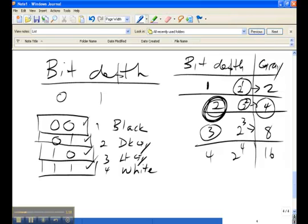Now typically for grayscale images it really doesn't make sense to go beyond 2 to the power of 8. So 2 to the power of 8 would be a bit depth of 8. 2 to the power of 8 would give you 256 different shades of gray.